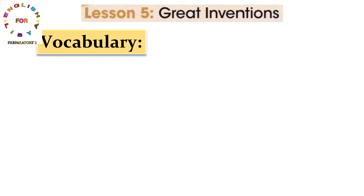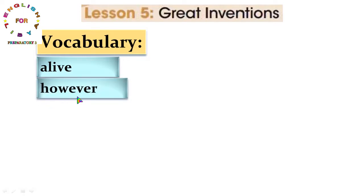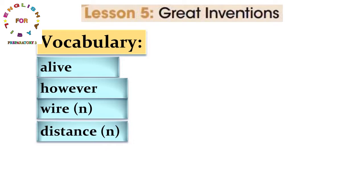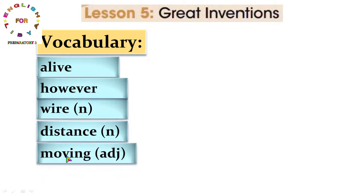مفردات الدرس نبدأ بالمفردات: 'alive' بمعنى حي، على قيد الحياة. 'However' بمعنى ومع ذلك، على أي حال. 'Wire' بمعنى سلك، لما نتكلم على أسلاك الهواتف على سبيل المثال، وهي اسم. 'Distance' بمعنى مسافة. 'Moving' كصفة بمعنى متحرك.